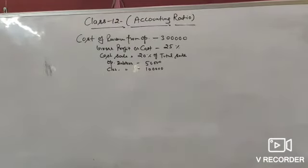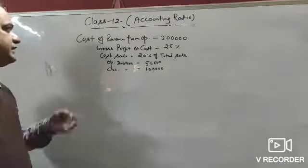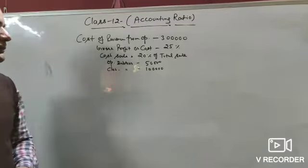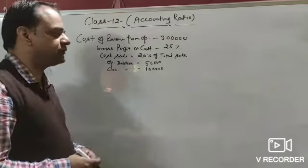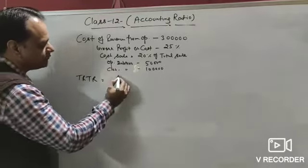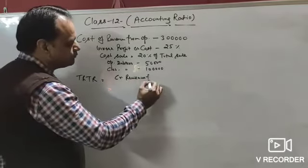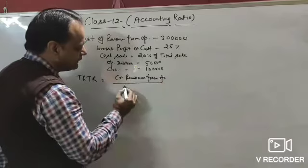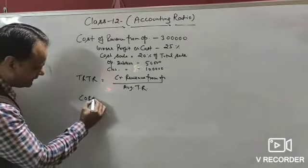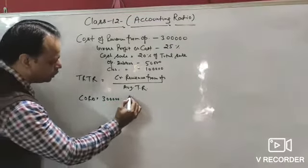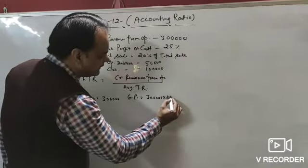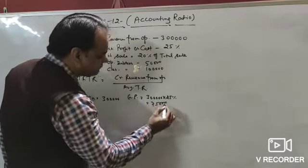Now illustration number 84. We have cost of revenue from operation ₹3,00,000, gross profit on cost 25%, cash sale 20% of total sale, opening debtors ₹50,000, closing debtors ₹1,00,000, and we have to find the trade receivable turnover ratio. Formula: credit revenue from operation divided by average trade receivable. Gross profit = 25% on cost = 25% of ₹3,00,000 = ₹75,000.